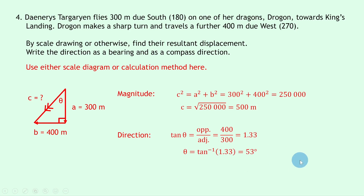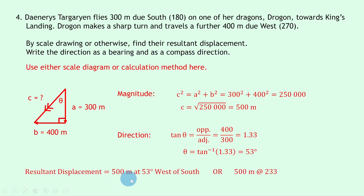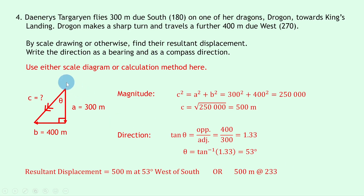Using 53 degrees to write the final answer: the resultant vector points 53 degrees away from south toward west, so displacement = 500 meters at 53 degrees west of south. As a bearing: starting at north (000), moving clockwise 180 degrees to south then adding 53 degrees gives a bearing of 233. So the resultant displacement is 500 meters at a bearing of 233.